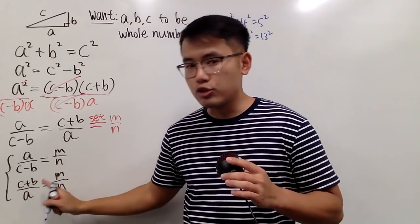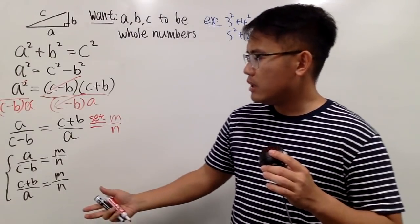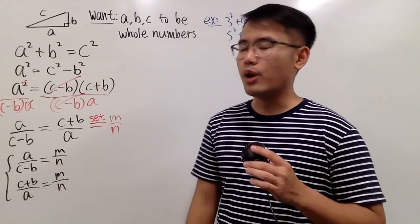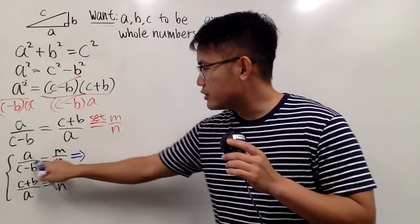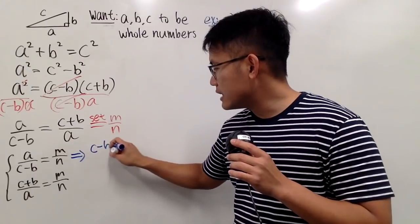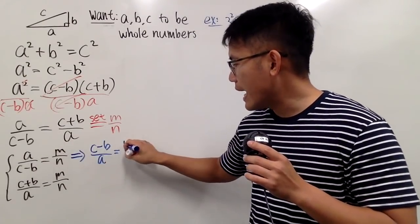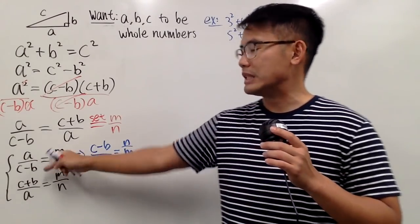Notice, this right here is actually preferred because we just have the A in the denominator. So why don't we make that happen for the top as well? And we can achieve that by just taking the reciprocals on both sides. Here we will have C minus B over A equal to N over M. Just take the reciprocals. Right?